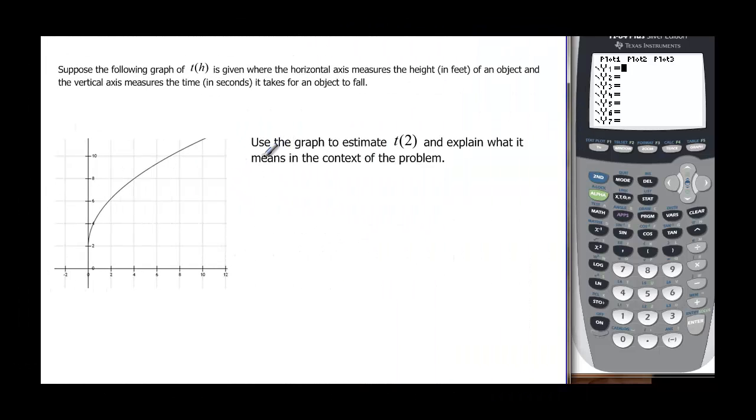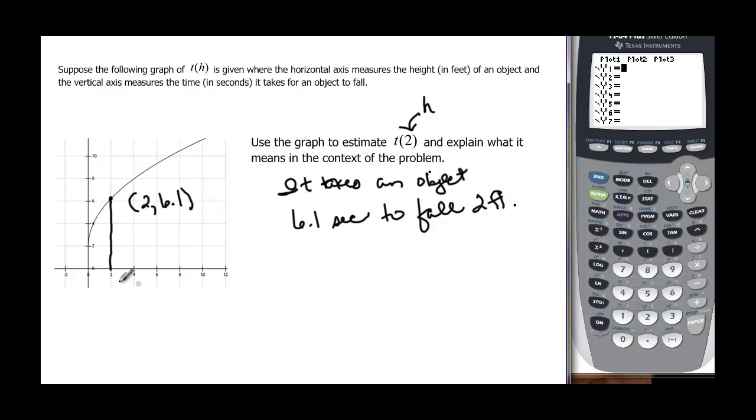We're using the same graph, and we want to estimate T of 2. Remember, this is our h, which is like an x value. So that would be on the x-axis of 2, we come up here and we find this point right here. Looks like it's a little more than 6, I'm going to say maybe 6.1. It takes an object 6.1 seconds to fall two feet, according to this model.